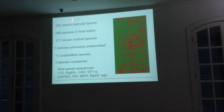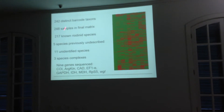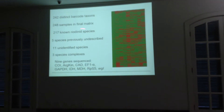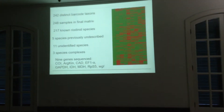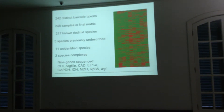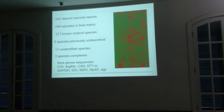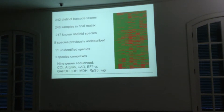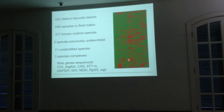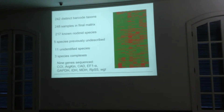We obtained 242 barcode taxonomic units. In our final matrix we have 248 samples. Of these, 217 are known Riodinidae species. We have five species that we are certain are new species, 11 unidentified species that could also be new, and three species complexes. Each column in the matrix represents a gene and each row a specimen — this shows how complete our matrix is.